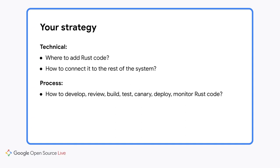Once the code is written, we need build and test tooling. Does your build system support Rust at all? How do Rust unit tests fit into the testing workflow? Can your engineers run Rust and non-Rust tests with just one command? And how about your production deployment canarying and monitoring tools — do they support Rust binaries? Can they collect monitoring information from Rust code? You should work through all of these questions before adding the first line of Rust code to your shipping product.